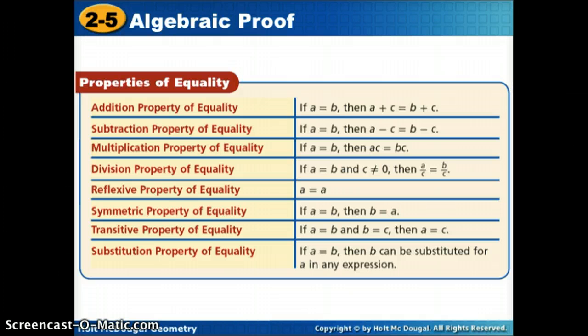We use these all the time but we don't really talk about what the name of them are. So I'm going to give you a copy with all of these properties on it but as you are solving, these are some of your choices for your reasoning. Anytime we add something to both sides of an equation we're using the addition property of equality. Anytime we subtract something from both sides we're using subtraction property. Anytime we multiply both sides of an equation by something we're using multiplication property. When we divide by something we're using division. This little extra piece just reminds you you can't divide by zero.